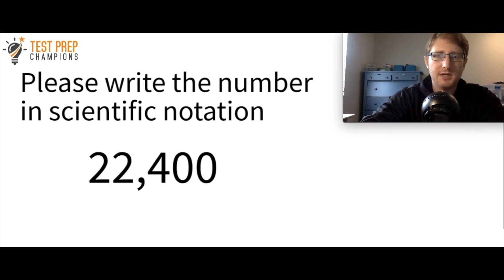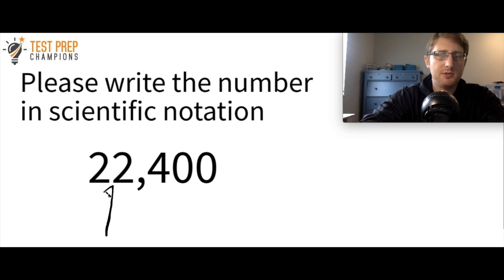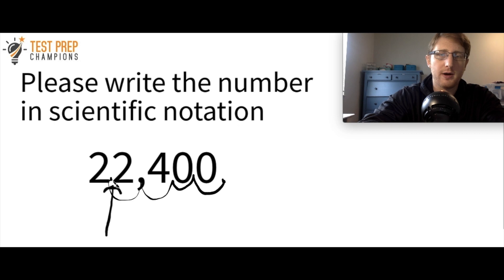This time the example is 22,400. Again, we want to end up with the decimal between the first and second digits — so between the two twos. My decimal is after the last zero, so I move it and count: 1, 2, 3, 4. So I write 2.24 times 10 to the fourth.